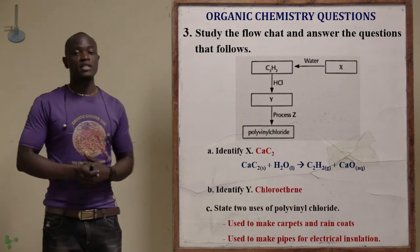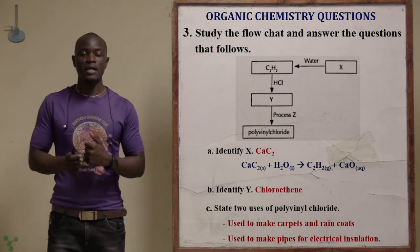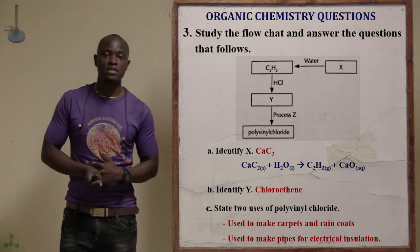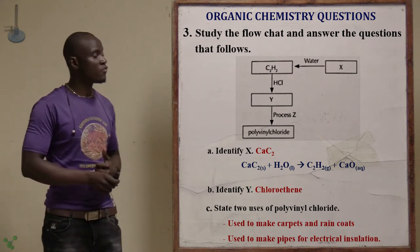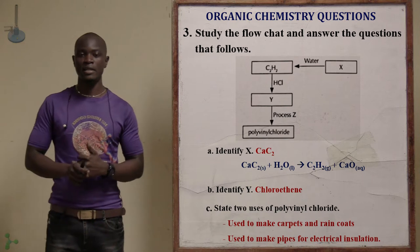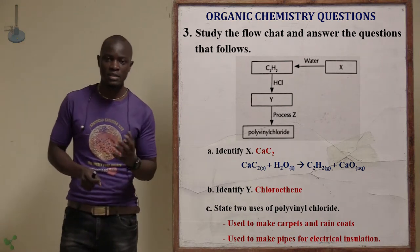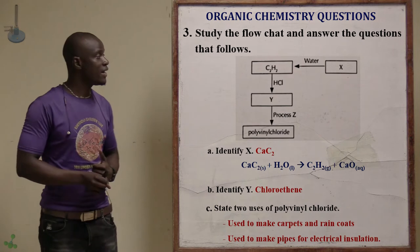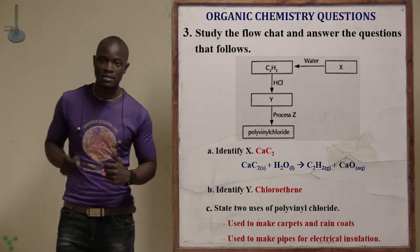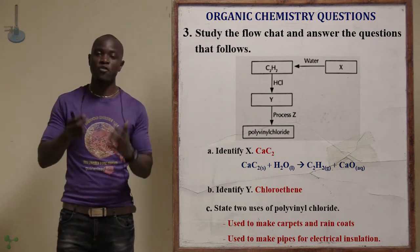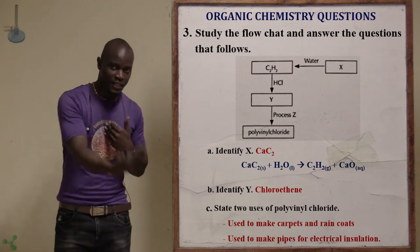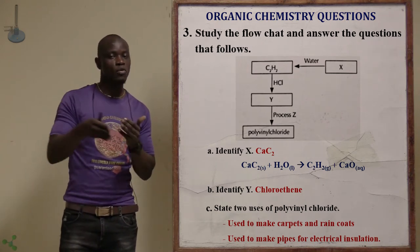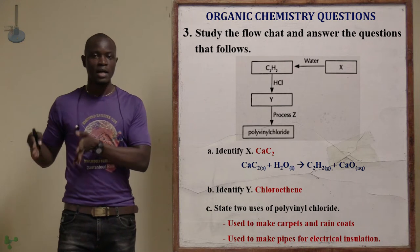The third question says: study the flowchart below and answer the questions. As you can see, we have water being inserted into something which produces ethyne. The first question asks to identify X. For us to go to ethyne, we are reacting water with a certain chemical.